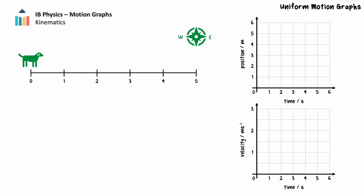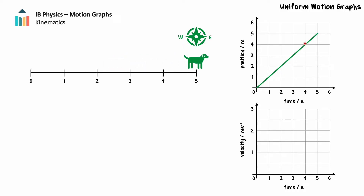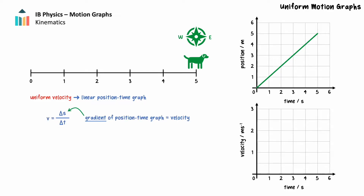Let's start with uniform motion and how it is represented on a position time and velocity time graph. An object has uniform motion when its velocity does not change over time. This means the object travels at a constant speed in a straight line. Consider the scenario in which a dog moves in a positive direction at a constant velocity. The dog's displacement will be the same for each time interval. The dog's motion produces a linear position time graph with a positive slope. Velocity is displacement over time — this is the gradient of the position time graph.